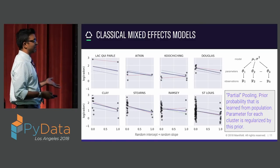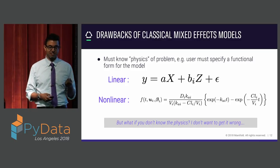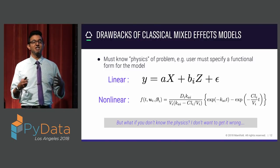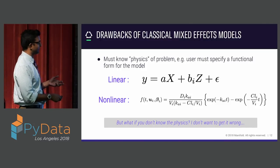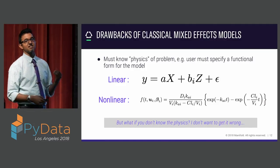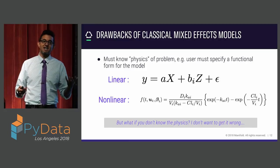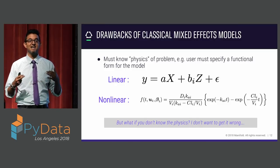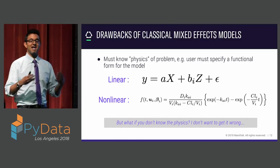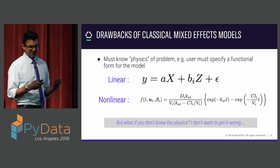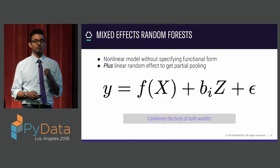There are still drawbacks. The biggest drawback of classical mixed effects modeling is that you have to specify the functional form of your model — you've got to know the physics. Whether it's linear or something nonlinear, there are learnable parameters, but you've had to specify the functional form. The beauty of modern machine learning — random forests, gradient boosting trees, deep learning — is that I don't have to specify the functional form. The algorithm itself is a universal function approximator and can learn nonlinearities by itself. So I would love to have the best of both worlds.